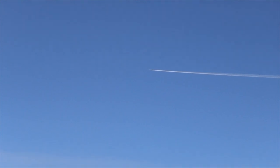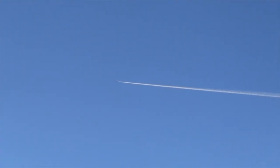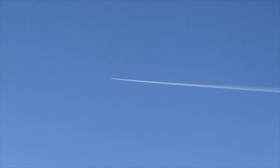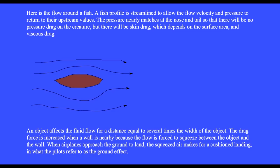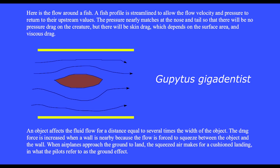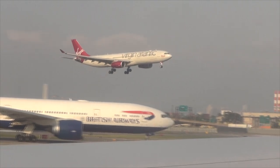At cruising altitude the flaps are in normal position and at high velocity the upward lift force matches the downward weight mg. To begin descending, the pilot reduces engine thrust to reduce velocity, making weight greater than lift, causing a controlled descent. The airplane's shape allows flow velocity and pressure to return to upstream values. For a fish, pressure nearly matches at nose and tail, producing no pressure drag but there is skin drag and viscous drag. When airplanes approach the ground to land, squeezed air makes for a cushioned landing known as ground effect.